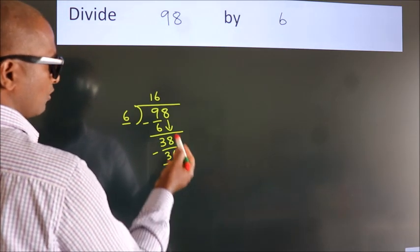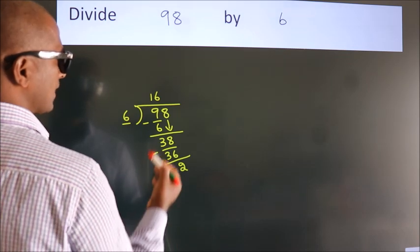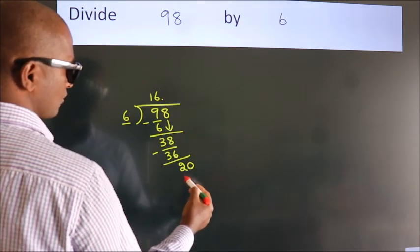After this, there are no more numbers to bring down. So what we do is put a dot and take 0. So, 20.